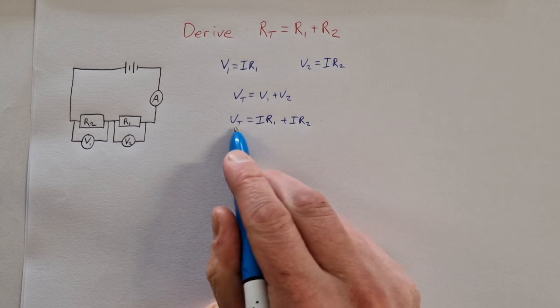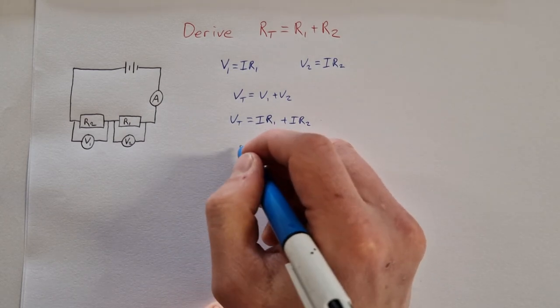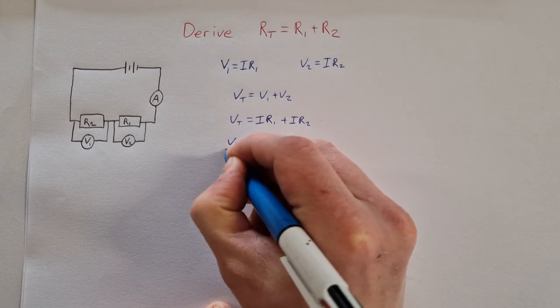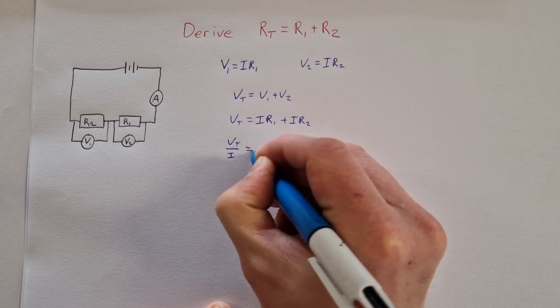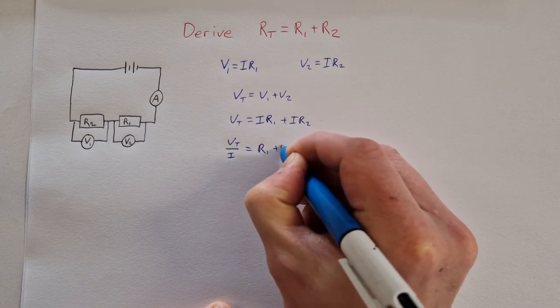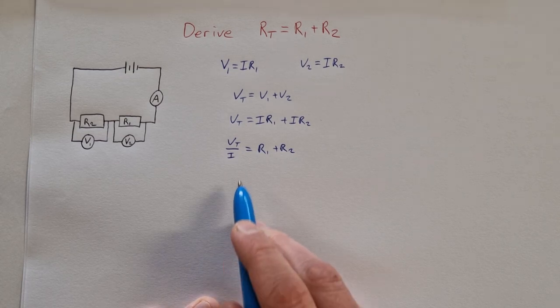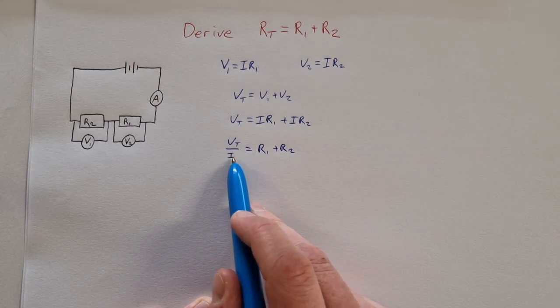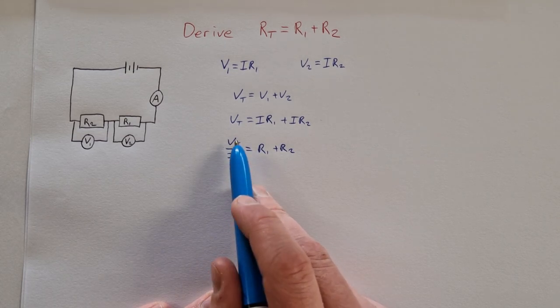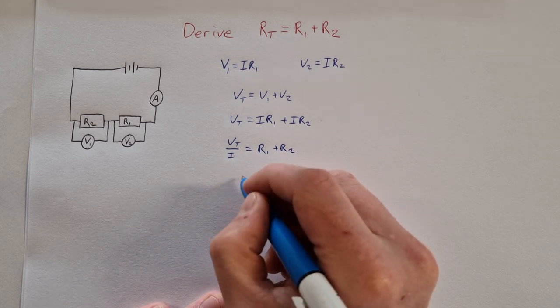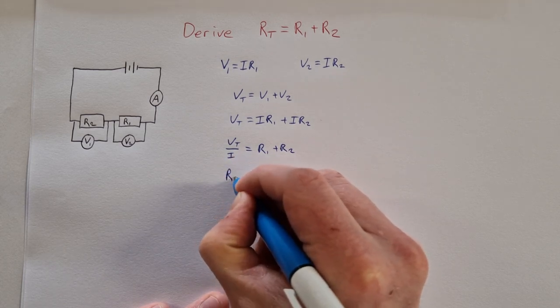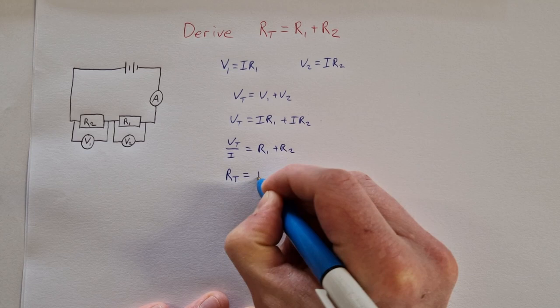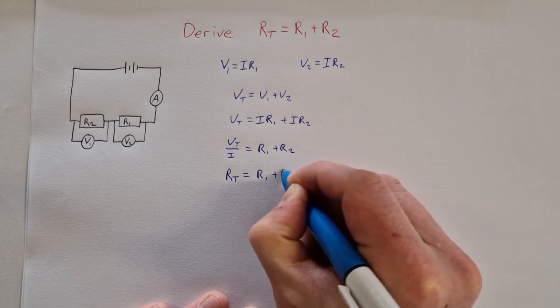I can now divide both sides by I to get Vt/I = R1 + R2. Using Ohm's law again, we know that V/I = R, so Vt/I = Rt. Therefore, the total resistance Rt = R1 + R2.